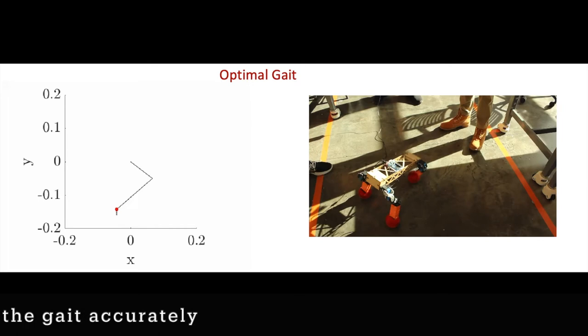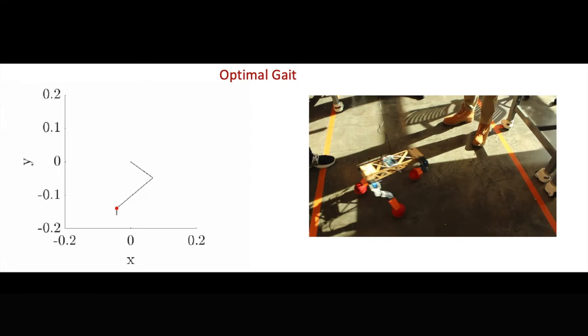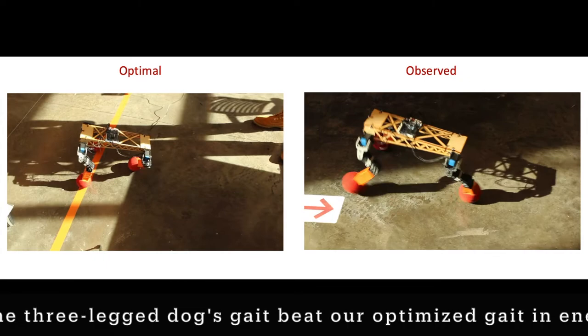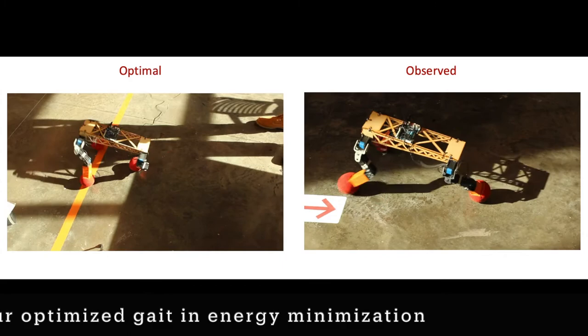Upon running a comparison of both gaits on our robot, we concluded that the observed, natural gait of a three-legged dog minimizes energy usage more effectively than the optimized gait we developed, leading us to the surprising conclusion that three-legged dogs actually do minimize the amount of energy they use to some extent.